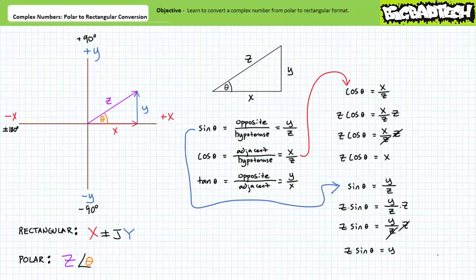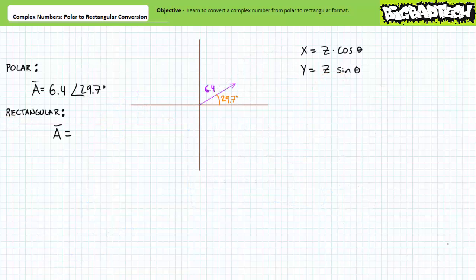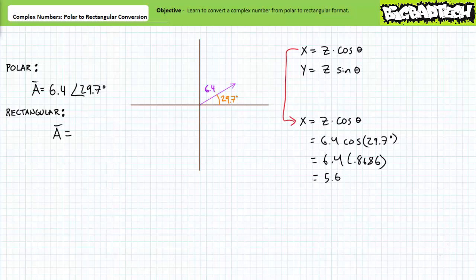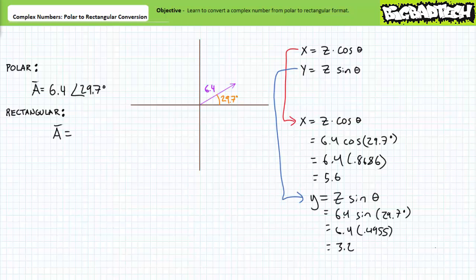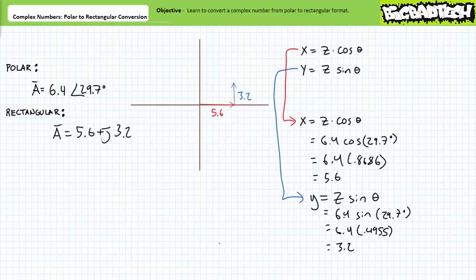Let's try some illustrated examples. Given a complex number in polar format as 6.4 at an angle of positive 29.7 degrees, let's express it in rectangular format. This angle places us in the first quadrant, so we expect a positive x and positive y component. The horizontal real x component is the magnitude times cosine of the angle: substituting gives roughly 5.6. The vertical imaginary y component is 6.4 times sine of 29.7 degrees, giving roughly positive 3.2. Therefore, 6.4 ∠29.7° equals positive 5.6 plus j3.2.